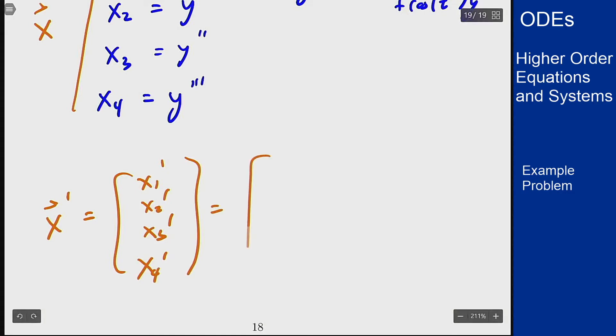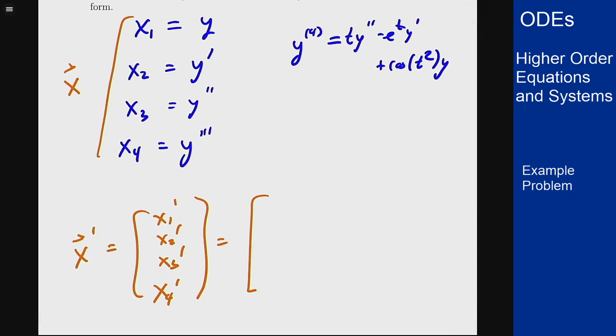Now x1 prime, if I scroll back up, is just y prime. Right because x1 is y, x1 prime is just y prime but that's just x2. x2 prime is just x3, x3 prime is just x4.